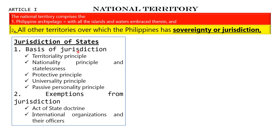What is the basis of jurisdiction? The territoriality principle — this is also in criminal law. Then you have the nationality principle and statelessness, found in Articles 14, 15, and 16 of the Civil Code. Take note also of the protective principle, universality principle, and passive personality principle. Also, the exceptions from jurisdiction: the Act of State Doctrine, the doctrine of immunity from suit, and international organizations and their officers — consuls, and organizations like the World Health Organization.